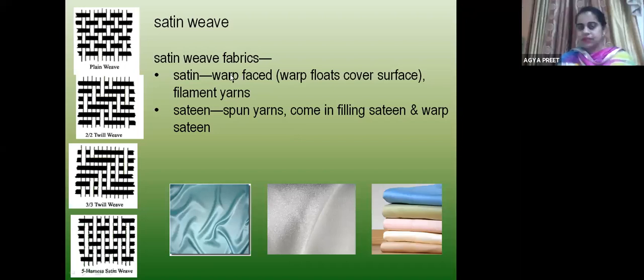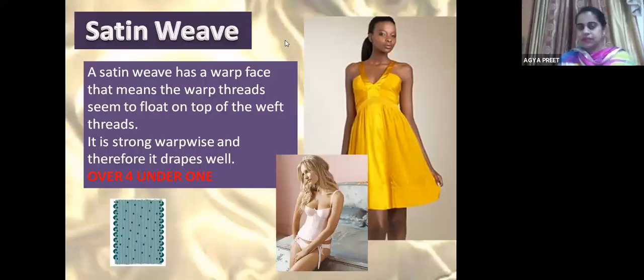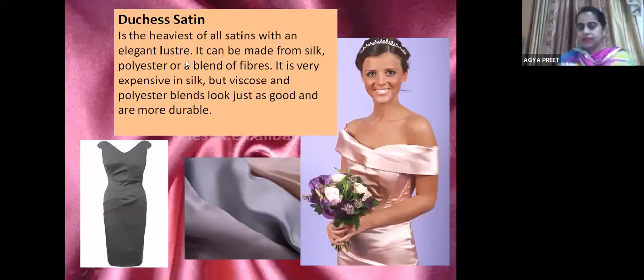Satin weave fabrics are used for gowns and nightwear. Duchess satin is the heaviest of all satins with elegant luster — it can be made from silk, polyester or a blend of fibers, and is very expensive when made from silk.